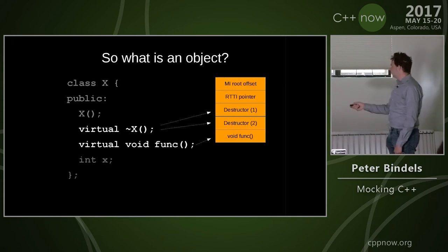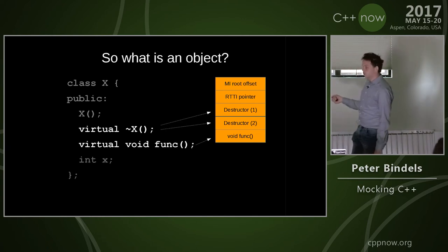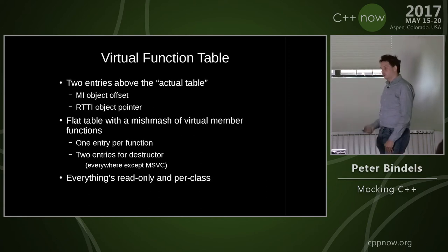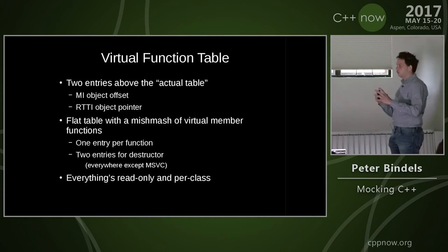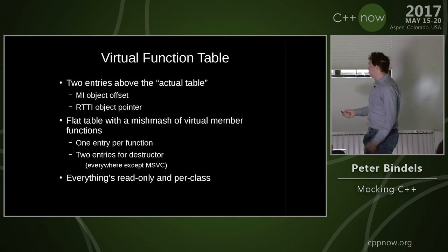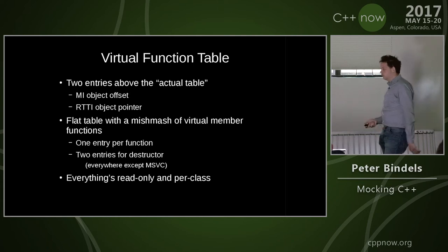With virtual functions, I have a destructor — and spoiler, you actually have three destructors, two of which end up in the vtable. So the vtable has two slots for the destructor, it's a bit special. I have a function and it gets its own slot. There are two other values: the object offset — given I'm invoking a function from this vtable, I apply this offset to my base pointer — and an RTTI object pointer, which is the exact same thing you'd get if you do `typeid`. The vtable is essentially a flat table, a jumble of function pointers, one entry per function, two for a destructor. Everything is read-only and per class.